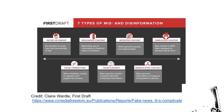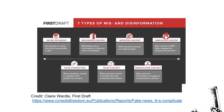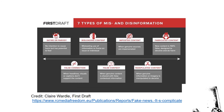Number one: satire or parody. When we make a parody or satirize something, we're not really saying the truth. But satire and parody do not have an intention to cause harm — they do, however, have the potential to fool us.